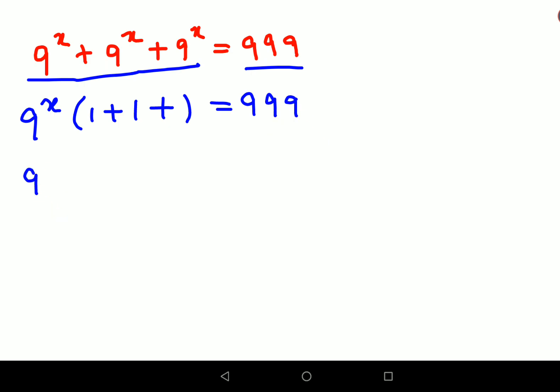So here you will get 9 raised to x into 3 equals to 999. So you will divide both sides by 3. So here the 3's are getting cancelled. You will get 9 raised to x equals to 333.